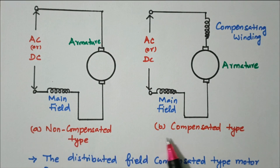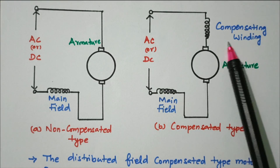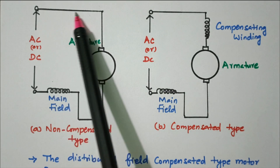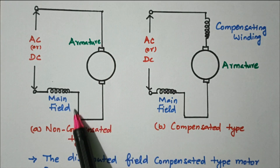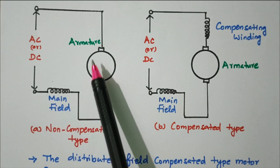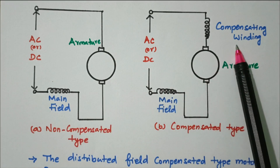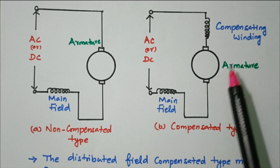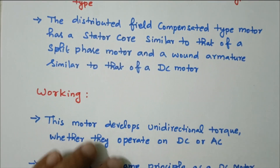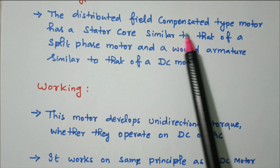In the non-compensated type, the supply is given to the armature and main field connected in series. In the compensated type, a compensating winding is available in addition to the armature and main field winding. We'll see why we use the compensating winding and what its purpose is.